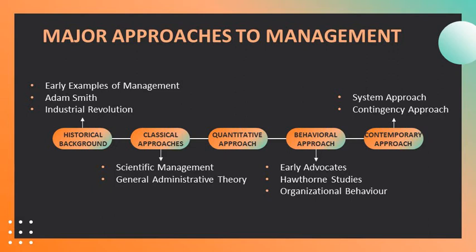The classical approach is the first study of management, emphasizing rationality and making organizations and workers as efficient as possible. The two most important contributors to scientific management theory were Frederick W. Taylor and the husband-wife team of Frank and Lillian Gilbreth. The two most important contributors to general administrative theory were Henry Fayol and Max Weber. Scientific management uses scientific method to define one best way for a job to be done — such as putting the right person on the job with correct tools and equipment, having a standardized method of doing the job, or providing an economic incentive to the worker. Frederick Winslow Taylor was the father of scientific management, and he published Principles of Scientific Management in 1911, giving birth to modern management theory.